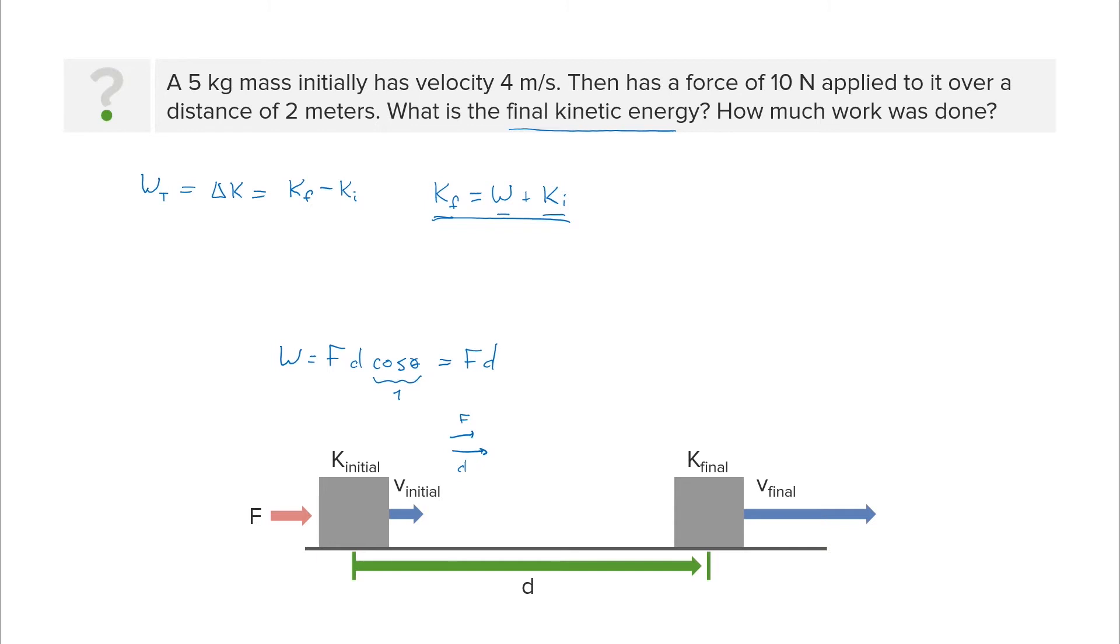Evaluating this expression using the value for work that we just found of force times distance, we have that the final kinetic energy is force times distance plus the initial one-half mv squared. So now we can put in some numbers here and find the final kinetic energy.